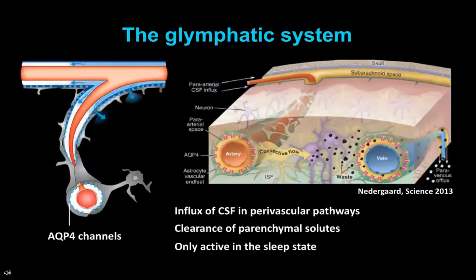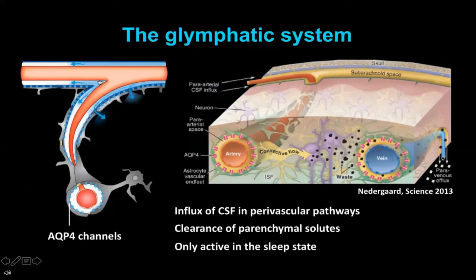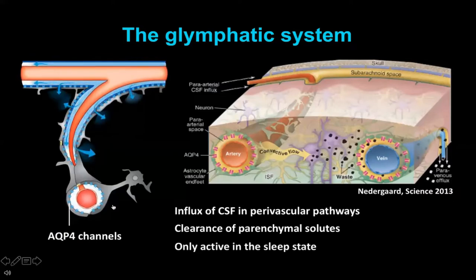This is something the glymphatic system can explain. It was discovered in 2012 in the lab of Maiken Nedergaard, and it is a system of perivascular influx of CSF. The CSF is circulating in the subarachnoid space, and when the pial surface arteries turn into penetrating arteries, the fluid—the CSF—will follow. These arteries are bounded by surrounding astrocytes.